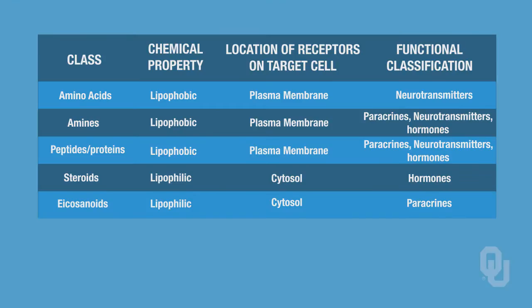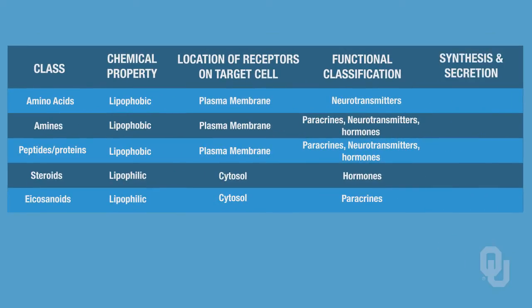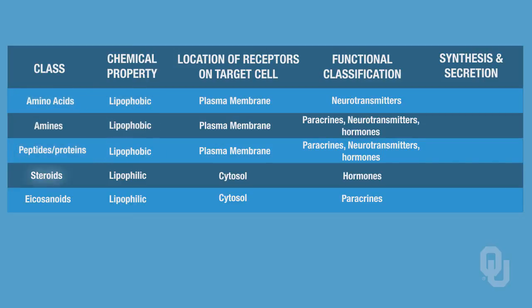We return to this table, and I would suggest adding another column for synthesis and secretion of the ligand. This is all based on the chemical class and, furthermore, based on whether your ligand is lipophobic or lipophilic, because synthesis and secretion is dependent upon that chemical property. Commit to memory that your amino acids, amines, proteins, and peptides are all lipophobic.